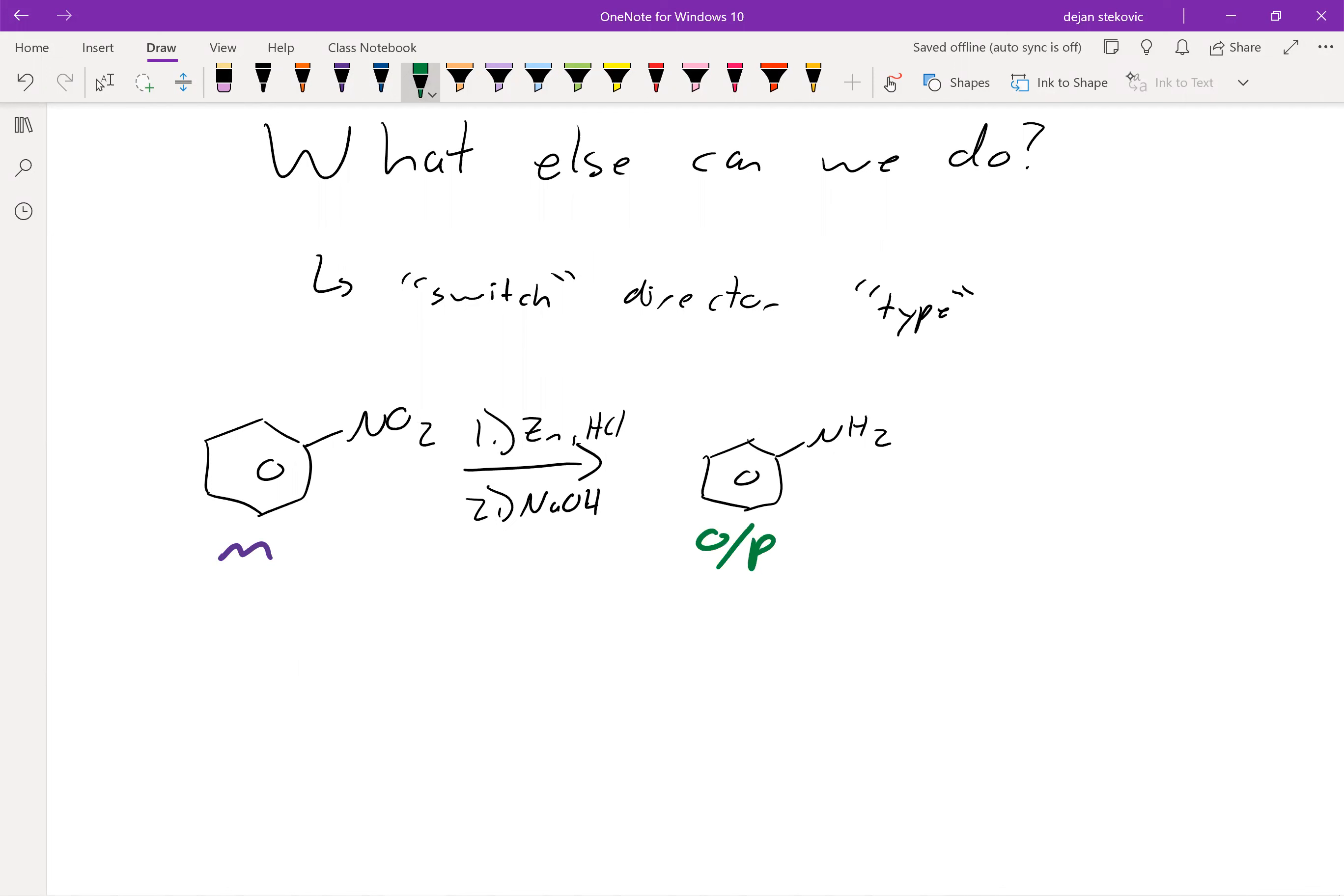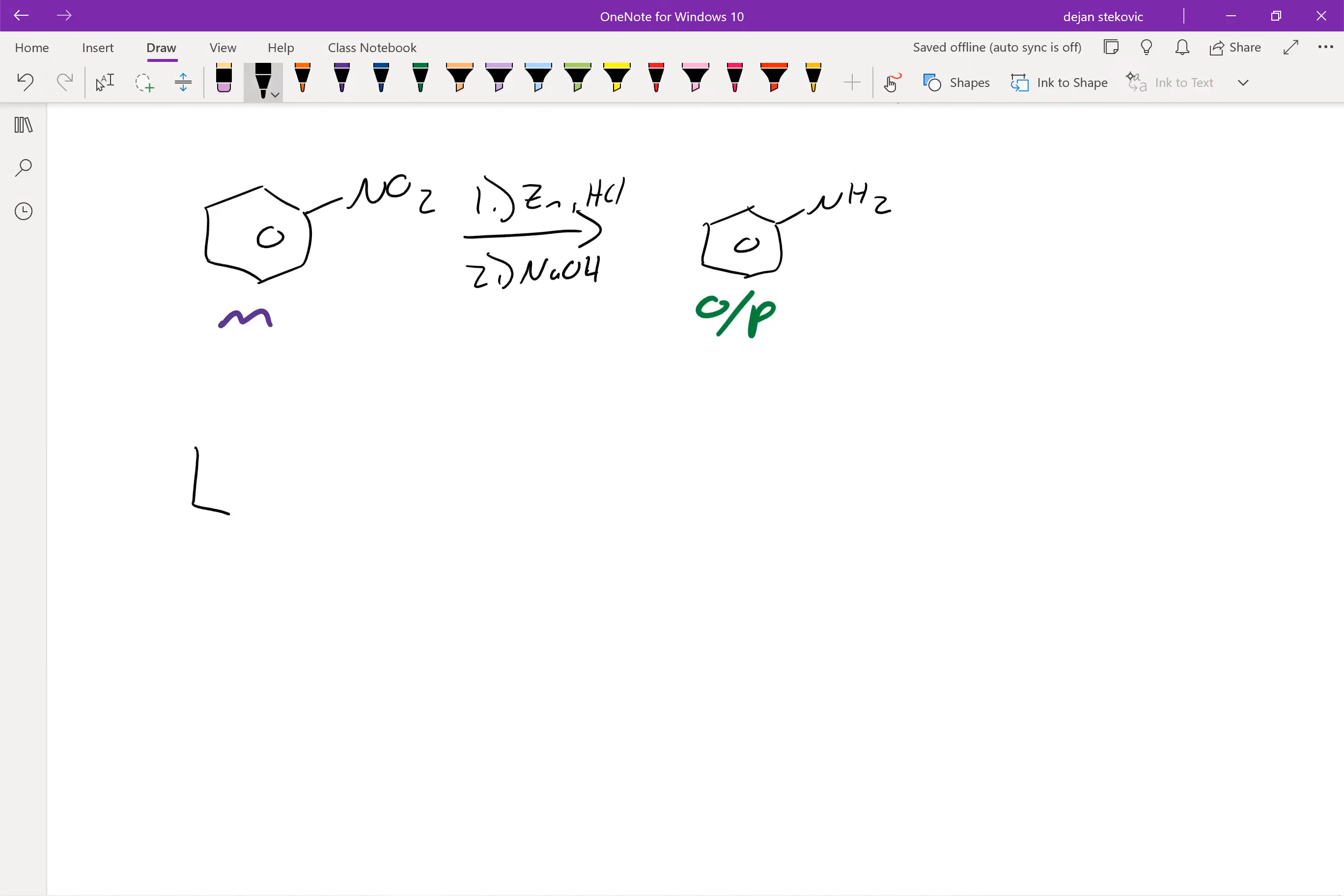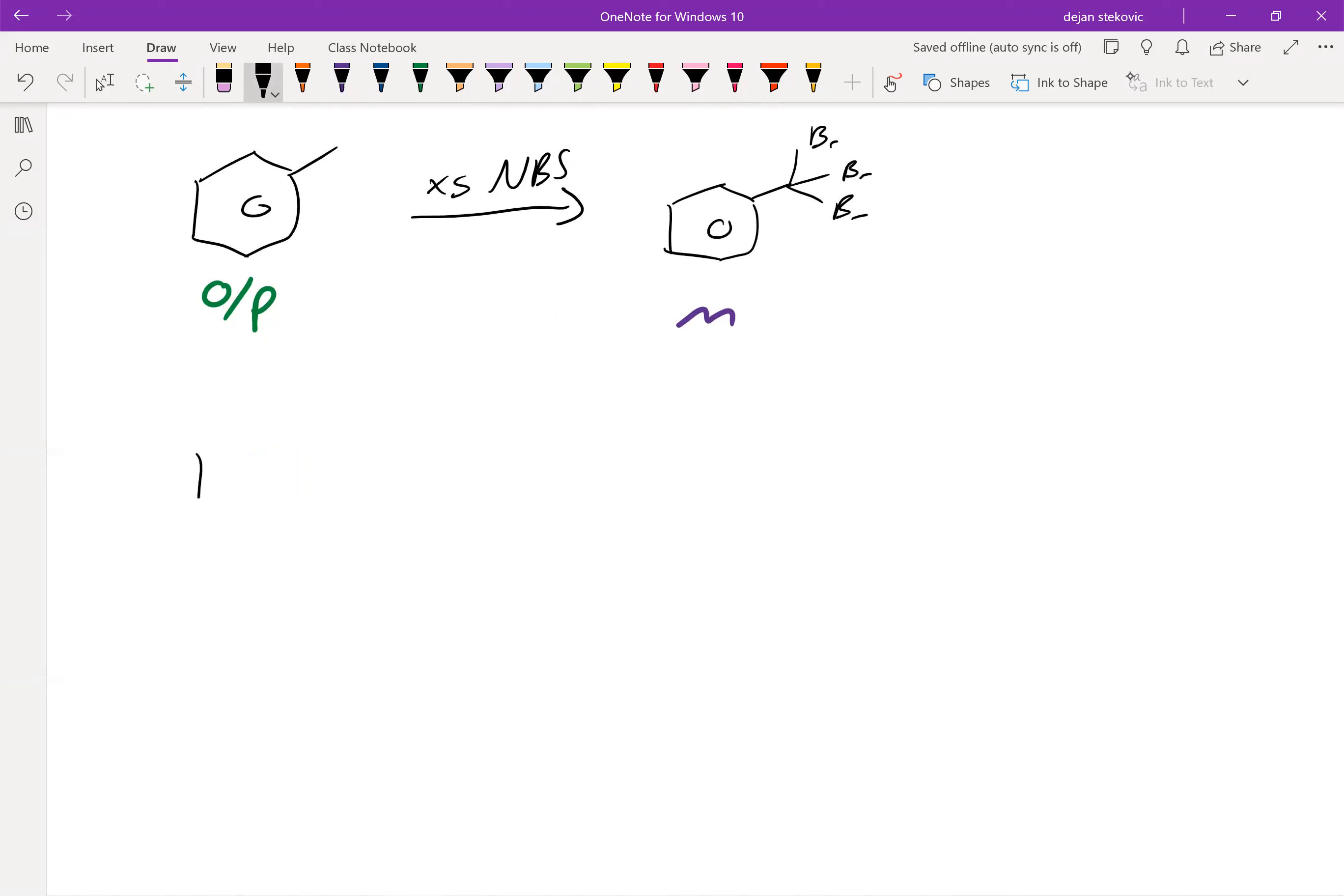We could use that, that's very useful. Another example of this is if we have just toluene here, that's obviously an ortho para director because it's an electron donating group, weak but still donating. And we could add some excess NBS to triple brominate it, and now it's a strong meta director.